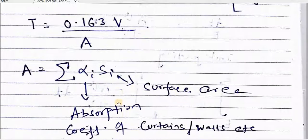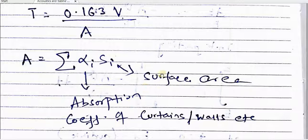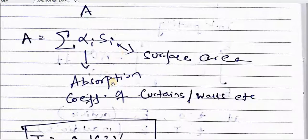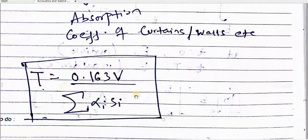Since different surfaces have different absorption coefficients, A equals summation of alpha_i times S_i, where S_i are the different surface areas and alpha_i are their corresponding absorption coefficients. Finally, Sabin's formula gives: reverberation time T equals 0.153 V divided by the summation of alpha_i times S_i. This is the derivation of Sabin's reverberation formula. Thank you.